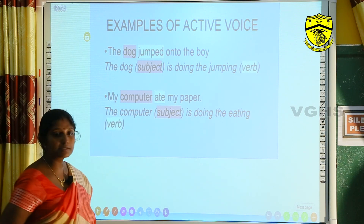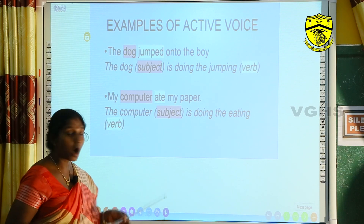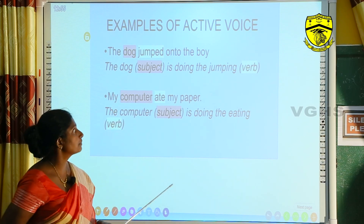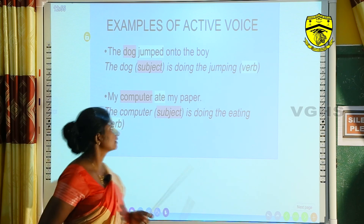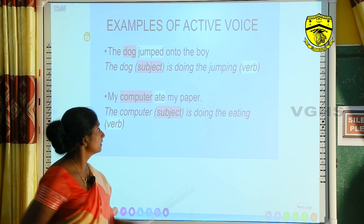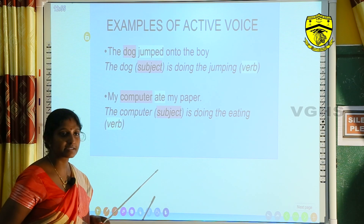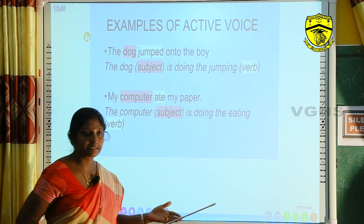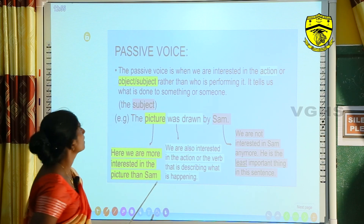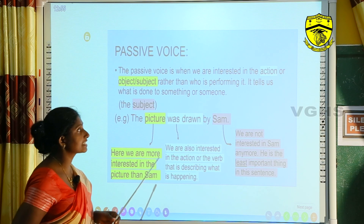Examples of active voice: 'The dog jumped onto the boy' — here the dog, the subject, is doing the jumping. 'My computer ate my papers' — here the computer, the subject, is doing the eating.